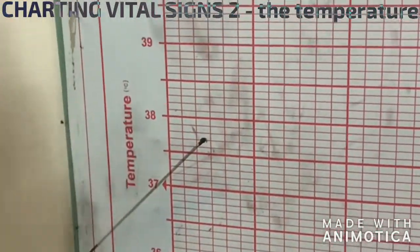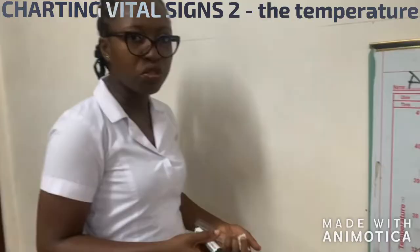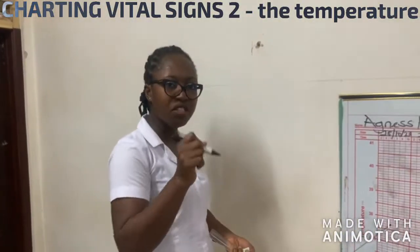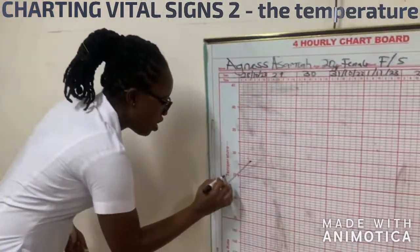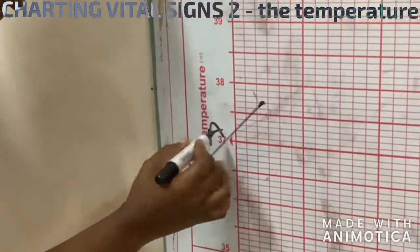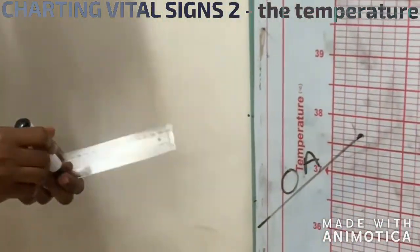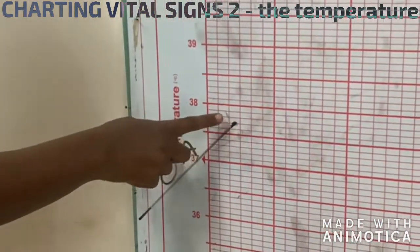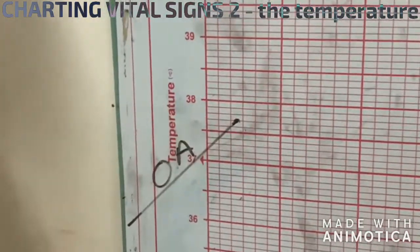If it is the first day of patient on the ward, you write 'on admission' here, OA, indicating on admission. So that is the patient's first temperature that was checked on admission.